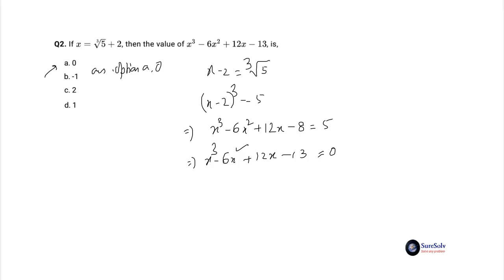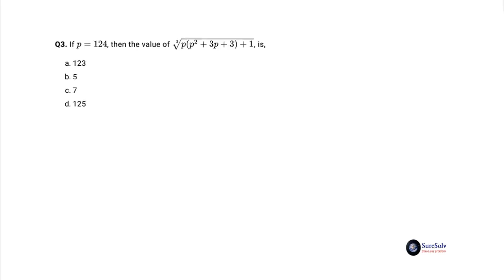Let's solve the next problem. Question 3 is: if p equals 124, then the value of cube root of p multiplied by p squared plus 3p plus 3 plus 1 is, option a: 123, option b: 5, option c: 7, and option d: 125.